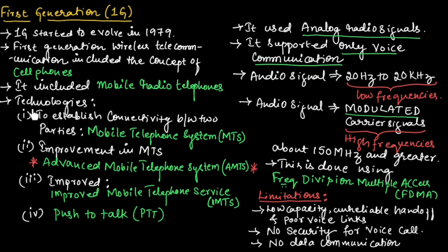The first generation included the following technologies. To establish connectivity between two parties, mobile telephone systems were developed, generally known as MTS. There was then an improvement, and advanced mobile telephone system, AMTS, was developed. Further improvements led to improved mobile telephone service, IMTS, and push-to-talk was also developed. AMTS is a very important technology in first generation wireless telecommunication system.